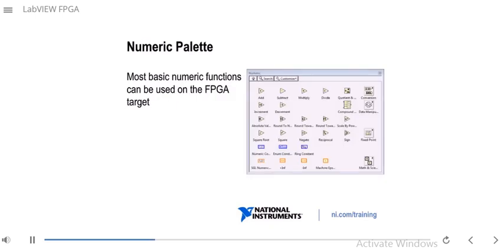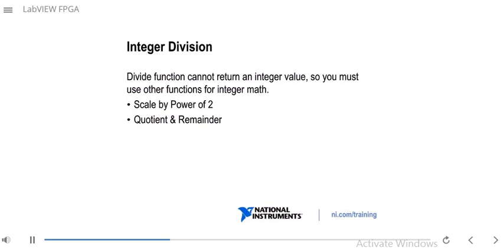Most basic numeric functions on the FPGA target are available, including addition and subtraction. For integer division, using a divide function with two integers will not return an integer — it returns a double-precision floating-point value, which is not supported on FPGA. You must use other functions: Scale by Power of 2 if dividing by a power of 2, or the Quotient and Remainder function, though the latter uses significantly more FPGA resources.